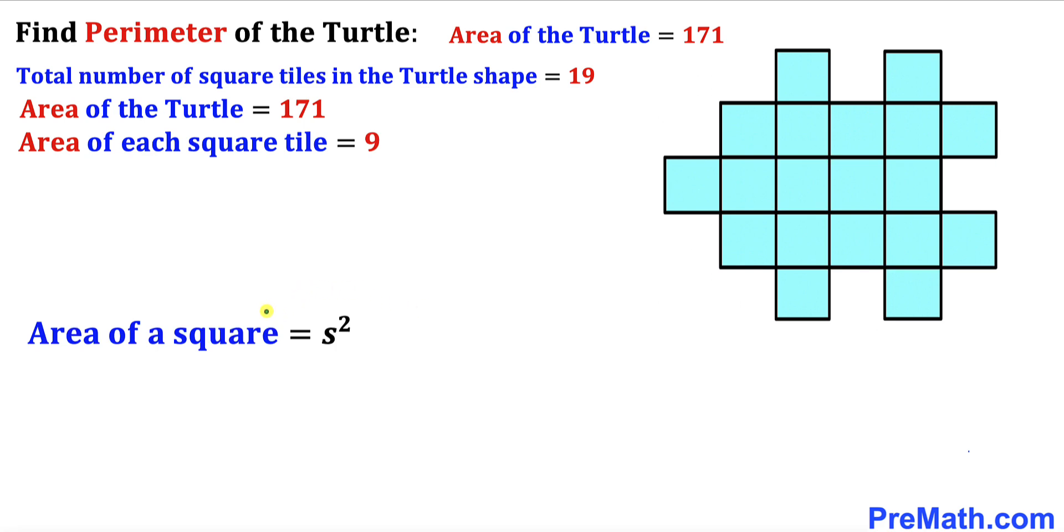Let's recall the area of square formula: Area equals s squared where s represents the side length. Let me tweak this 9 that could be written as 3 squared. Therefore the side length of each square tile is going to be 3. The side length of each square is 3 units.